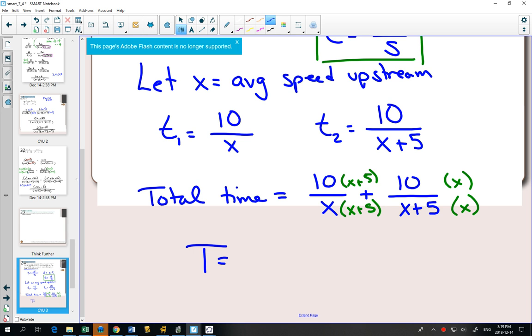So our total time will be common denominator of x and x plus five. Here I would have 10x plus another 10x, which would be 20x, 10 times five plus 50.